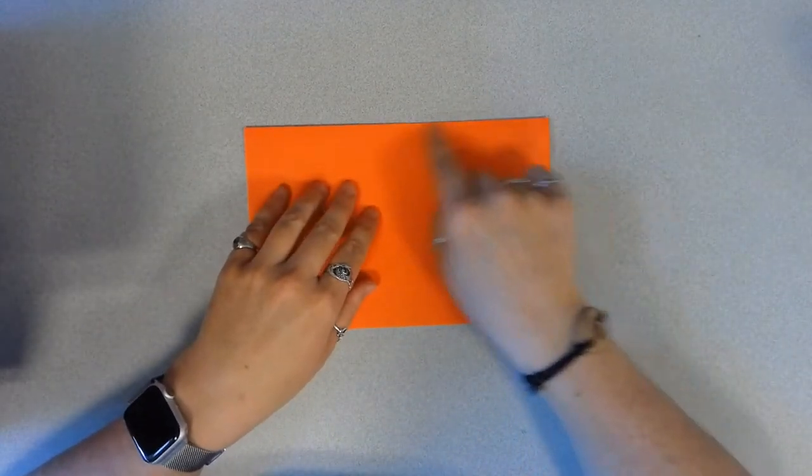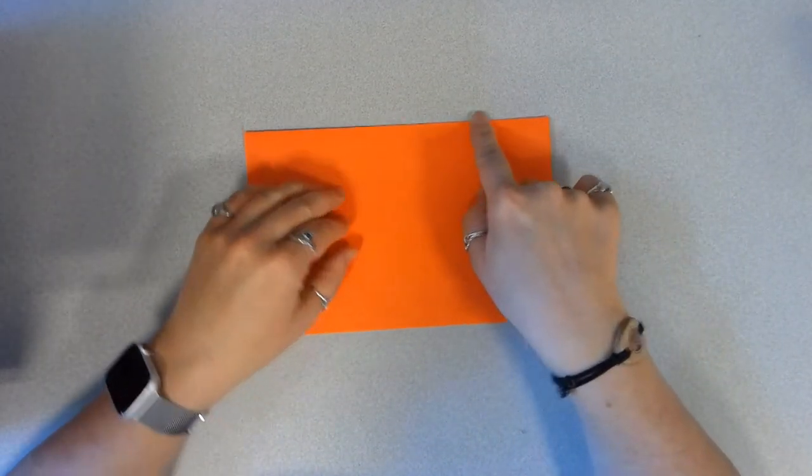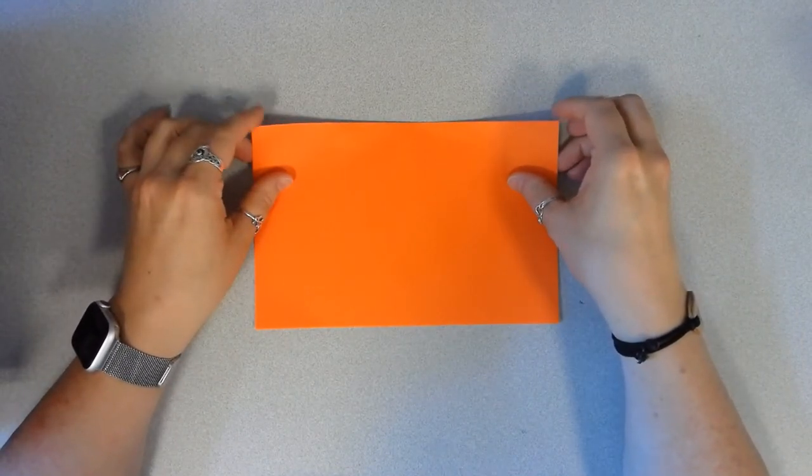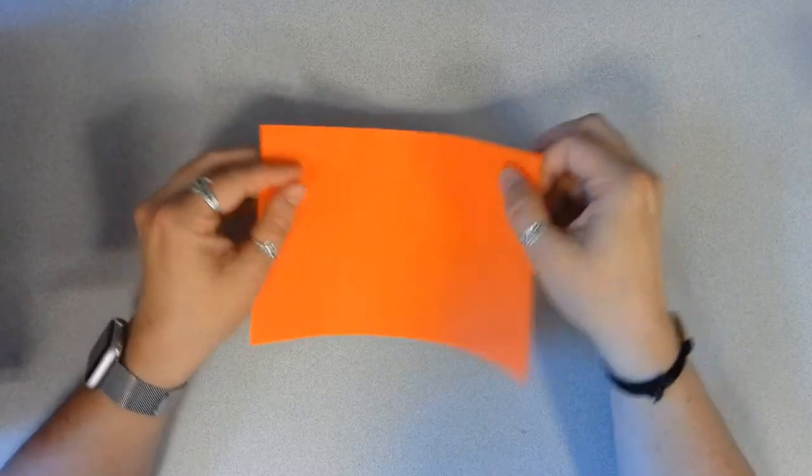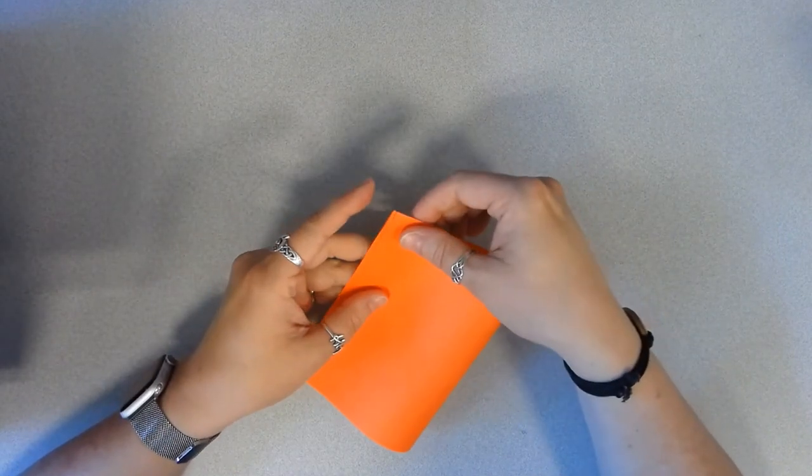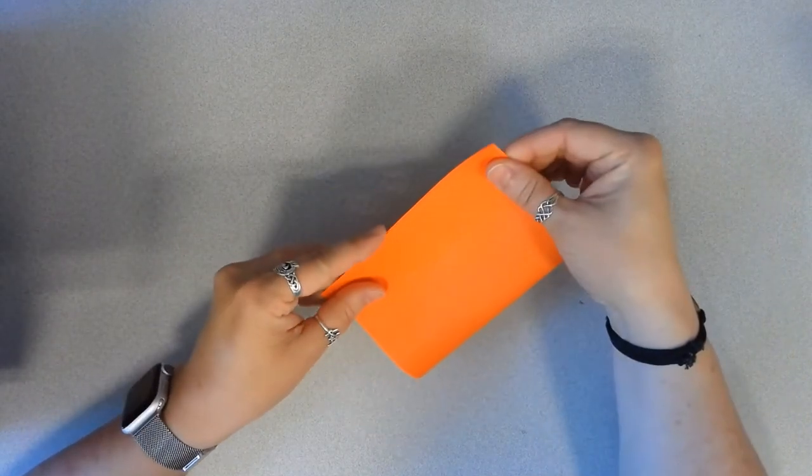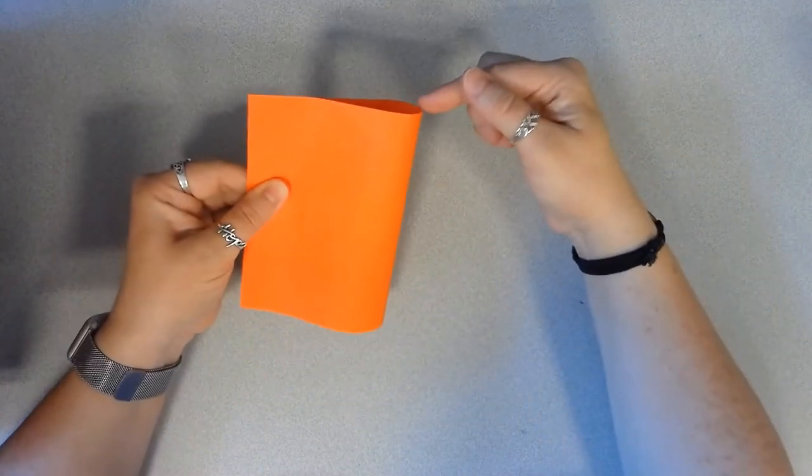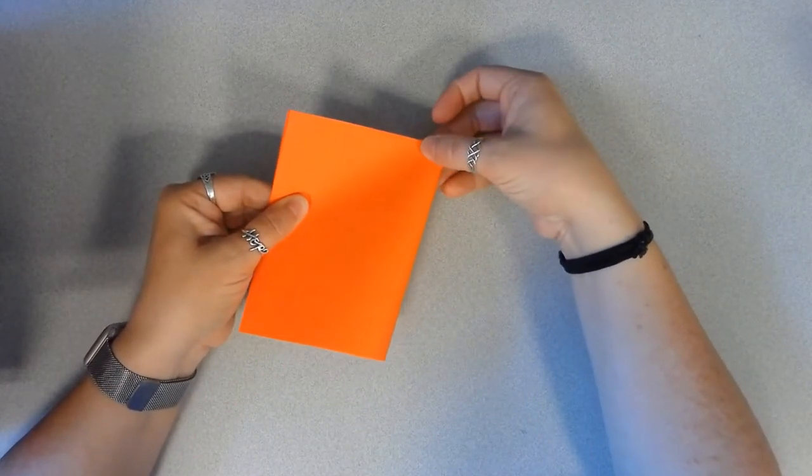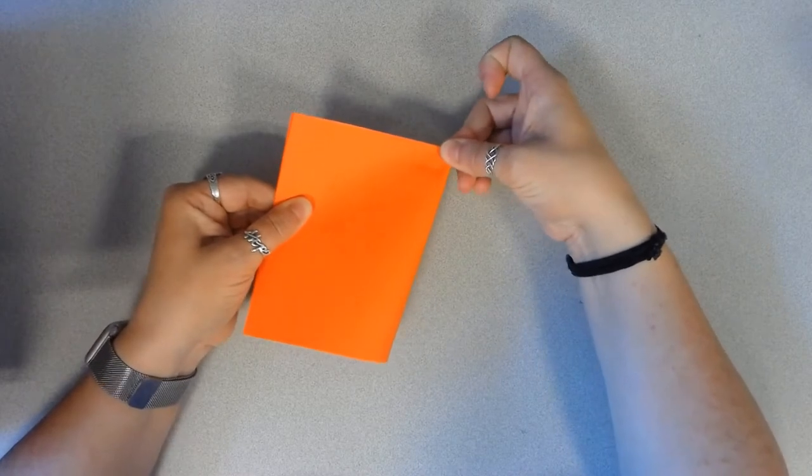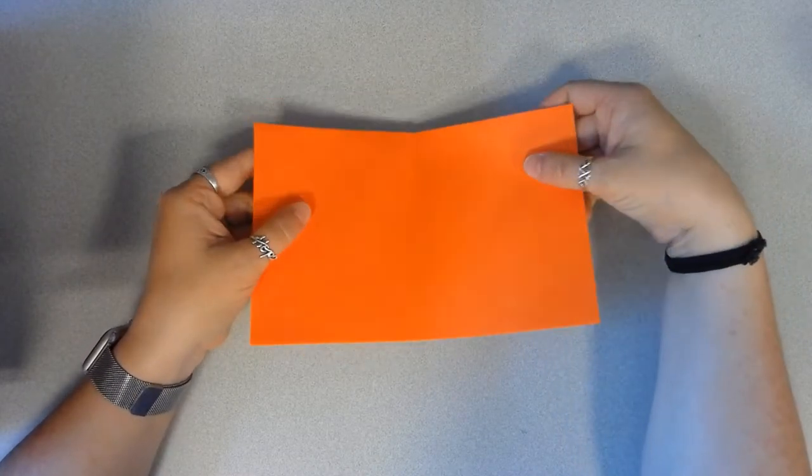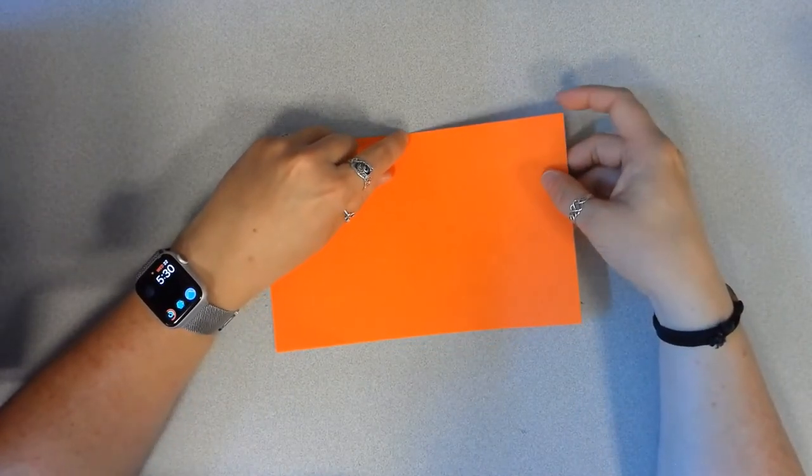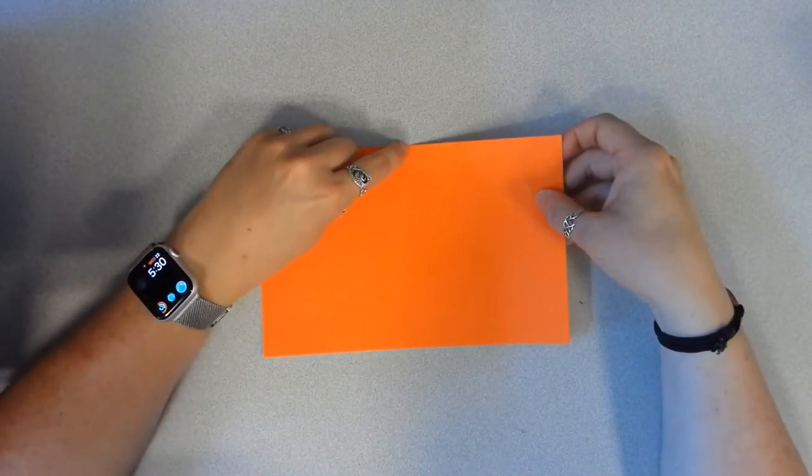And then we need to find about the middle of this folded edge. I think the easiest way to do this is to take these two top corners and just line them up. Over here, we're going to just give it a little pinch just at the top. That's going to make a mark so we can see where the middle is. It doesn't need to be perfect, but I think it's easier if you have a visual cue.